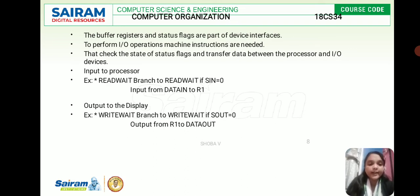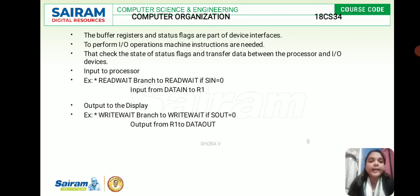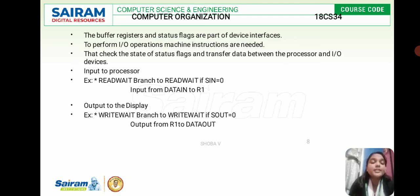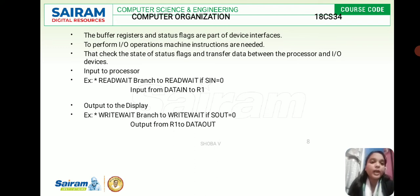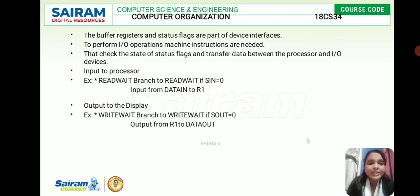Whenever a user presses a key on the keyboard, the data input buffer register stores whatever value was pressed and the status flag SIN becomes one. When it is transferred to the data out buffer register by the processor, SOUT becomes one. This is the main internal functioning happening inside the computer — it is remarkable how whenever you press a letter on the keyboard, immediately you can see the value on the monitor.